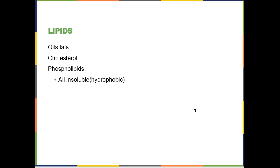Next up is lipids. There are three different kinds: oils or fats, cholesterol, and phospholipids. They are all lumped together as lipids because they have similar properties regarding water — they are all hydrophobic. Oils and phospholipids are structurally similar to one another, while cholesterol is not structurally similar to either of the other lipids.